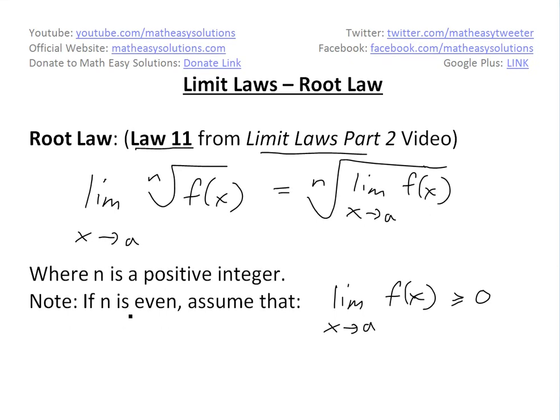Note: if n is even, you can't have a negative inside, so the limit as x approaches a of f(x) must be greater than 0, and we assume the limit exists.